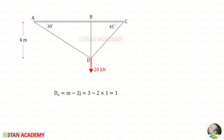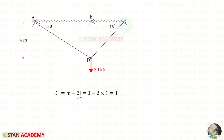First we have to find the degree of static indeterminacy. This is the formula to find that in the cantilever truss. m is the number of members — there are three members: AD, BD, and CD. We should not consider AB and BC as members because these are the fixed ends. So m is 3. j is the number of joints; there is only one joint, joint D. We should not consider A, B, and C as joints because these points are at the fixed end. For the degree of static indeterminacy, we will get 1.